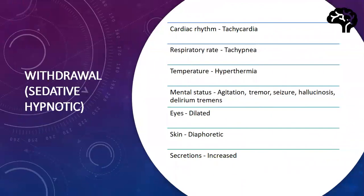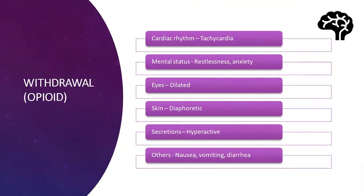An important point: with withdrawal of sedative-hypnotics, the patient may have tachycardia, tachypnea, increased temperature, and mental status changes including agitation, tremors, seizures, hallucinosis, and delirium tremens. Pupils will be dilated, skin diaphoretic, and secretions increased. With withdrawal of opioids, cardiac rhythm will be very fast (tachycardia), mental status shows restlessness and anxiety, pupils will be dilated, skin diaphoretic, secretions hyperactive, and other findings include nausea, vomiting, and diarrhea.